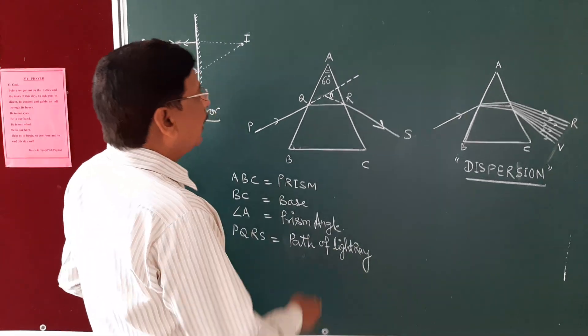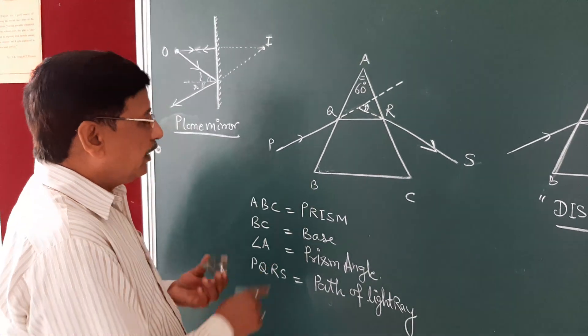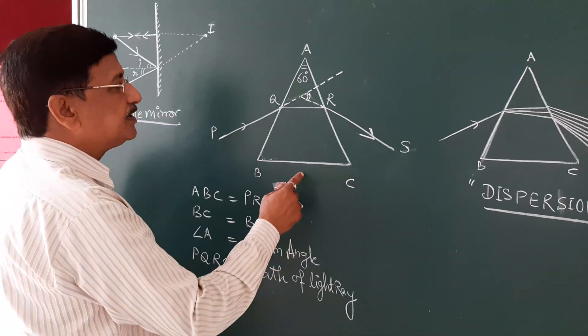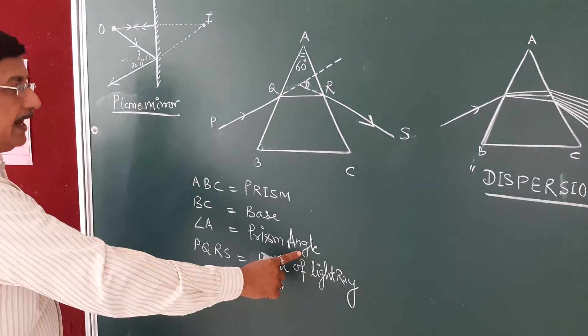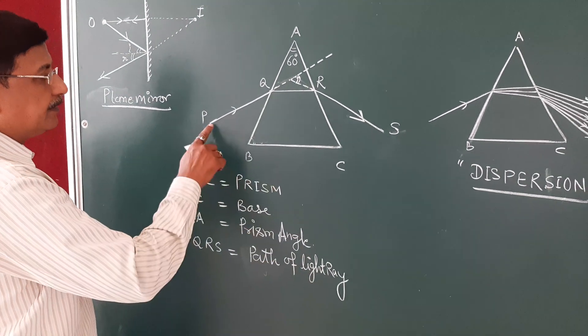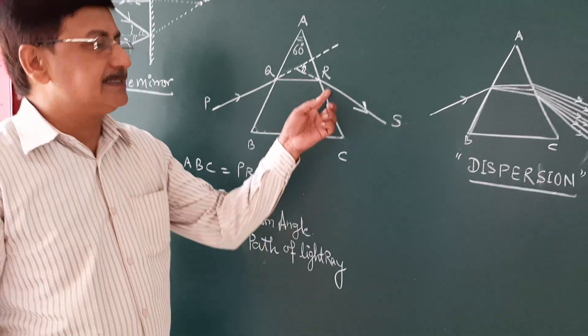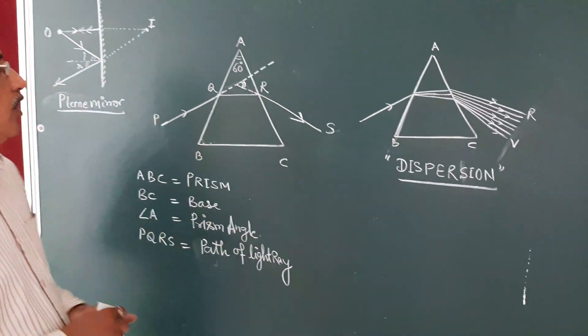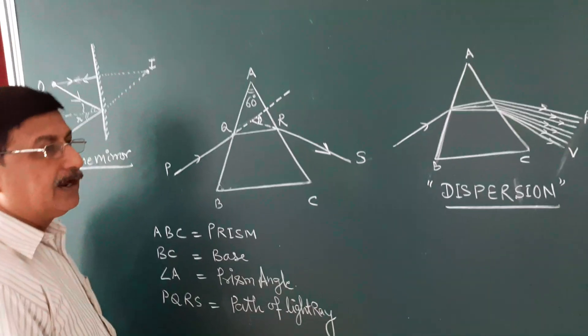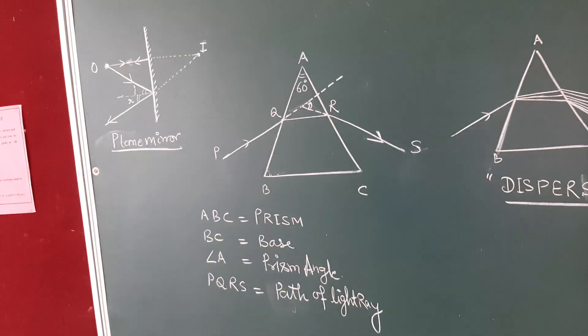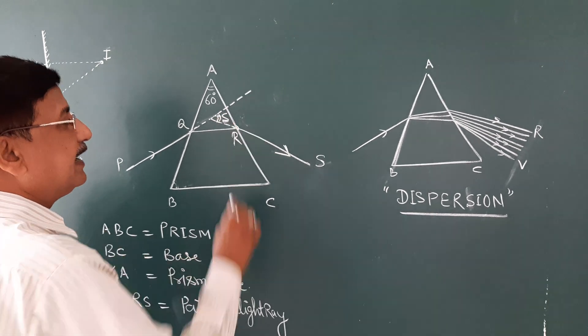This is our prism. Often all the sides of a prism are equal. Triangle ABC is a prism and BC is called the base of the prism, while angle A is called prism angle. And PQRS is the path of light ray. PQ is incident ray, QR is path of light ray inside the prism, and RS is the emergent ray. If we extend the emergent ray backward, then it meets the incident ray. This angle is called angle of deviation and it is denoted by delta.